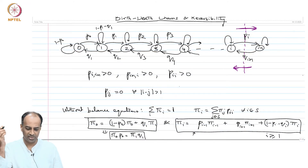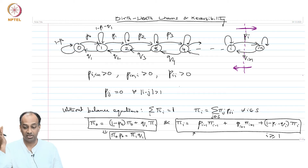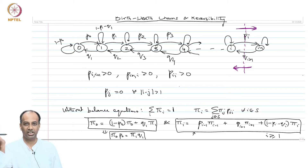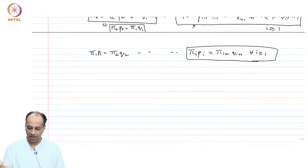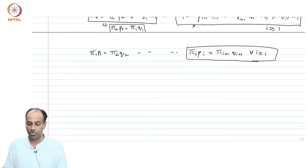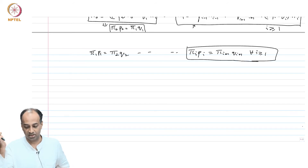Now, the structure of the chain is such that it is one irreducible chain, so everything communicates. Also, the Markov chain is aperiodic because there are self-transitions. The question is when it is positive recurrent. If you manage to find a pi_i — the stationary distribution — that satisfies these equations and is a valid probability distribution, then you have shown positive recurrence and found the stationary distribution.